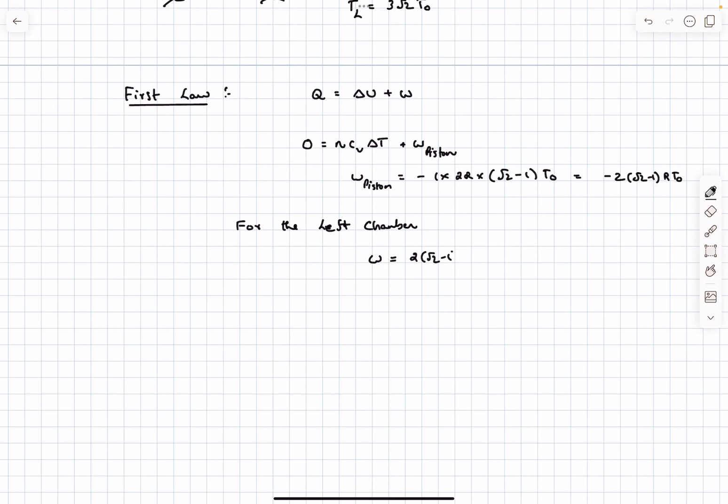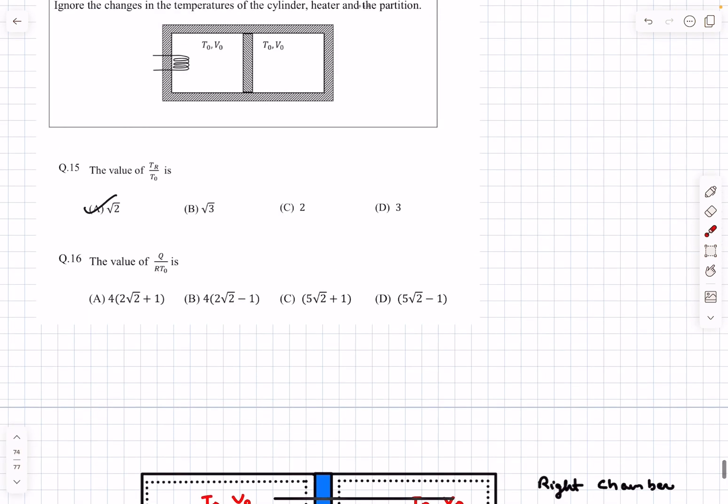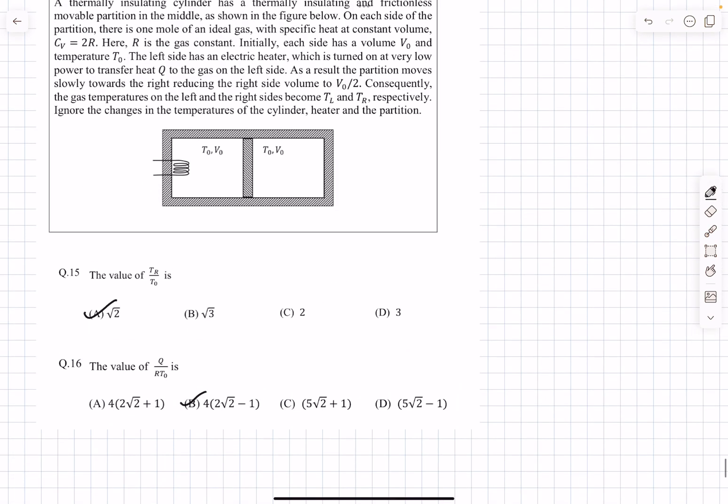Finally we have the work done. Now all we need is ΔU, which is simply n × CV × ΔT. This gives (3√2 - 1) × 2RT0. After substituting into our first law, we get Q = 4(2√2 - 1)RT0. We needed Q/(RT0), so the answer is option C. That was it for this video guys.